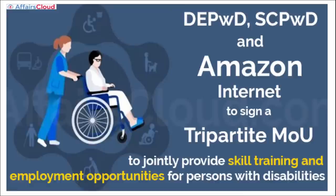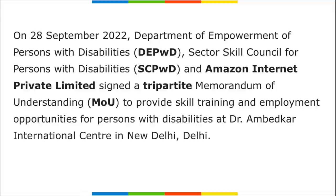Next: the Department of Empowerment of Persons with Disability (DEPWD), the Sector Skill Council for Persons with Disability, and Amazon Internet Private Limited — these three organizations signed a tripartite MOU to provide skill, training, and employment opportunities for persons with disabilities.